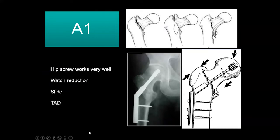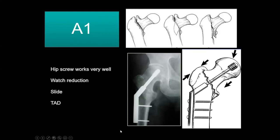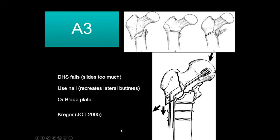We know from lots of studies that the hip screw works very well for an A1 fracture. Even with medial buttress problems, the hip screw is designed to deal with that because it allows sliding, as long as you've got the reduction right. You should be aware of the tip apex distance — that's the distance from the tip of the screw to the center of the femoral head on both AP and lateral views. It has to be less than 25 millimeters; otherwise the screw is too far from the bone and the failure rate increases. That's called the TAD, or tip apex distance. If you have an A3 fracture, or a reverse obliquity fracture, the alignment facilitates far too much slide — the DHS or sliding hip screw will slide too much, so you have to put something in there that creates a lateral buttress that stops the thing sliding.